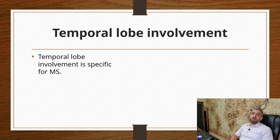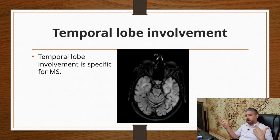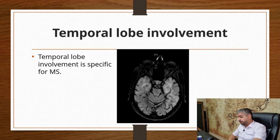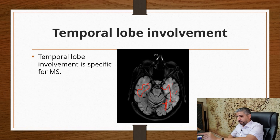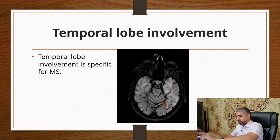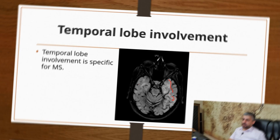Temporal lobe involvement is very specific for MS. We don't see much temporal lobe involvement in small vessel disease or other diseases that might simulate MS, so temporal lobe involvement is very suspicious for MS. You can see multiple areas of T2 hyperintensity in the temporal lobe bilaterally, involving the subcortical U fibers, with no T2 hypointensity — no gray matter — between the plaques and the cortex.